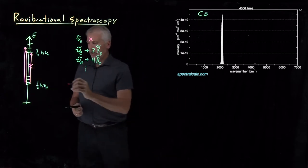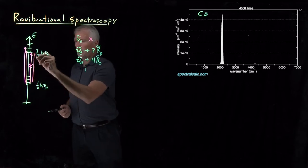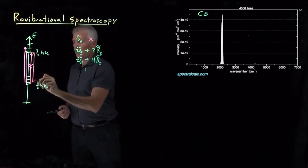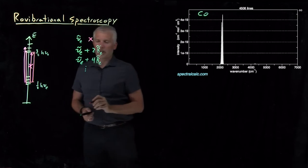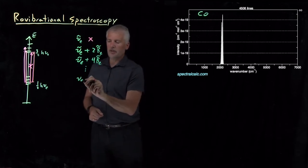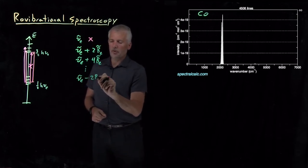Or if I start with L equals one and I lose, so I start with rotationally excited, but I end up not rotationally excited, then I've lost those two units of rotational energy. So I can lose two units.